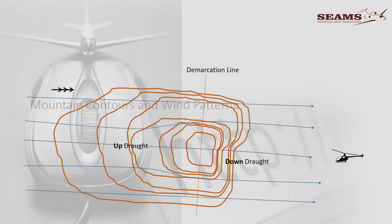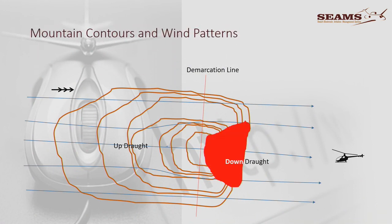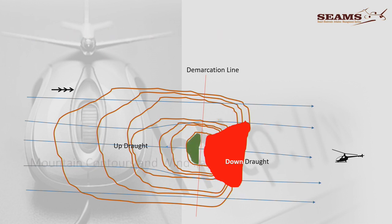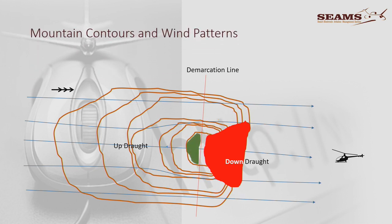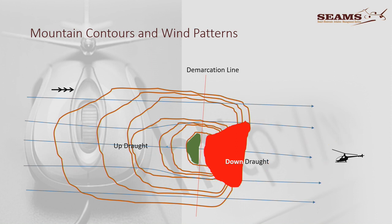We've got a demarcation line with an updraft and a downdraft area. I've made the downdraft area red because I don't want you to be there, and the green area is on top of the hill on the updraft side. You are flying into wind from this side. You do not want to be below the summit in the downdraft area. There are various ways of getting onto the mountain, and we'll get to how to approach.